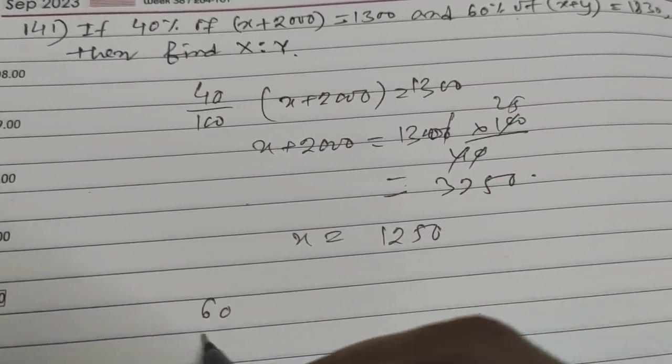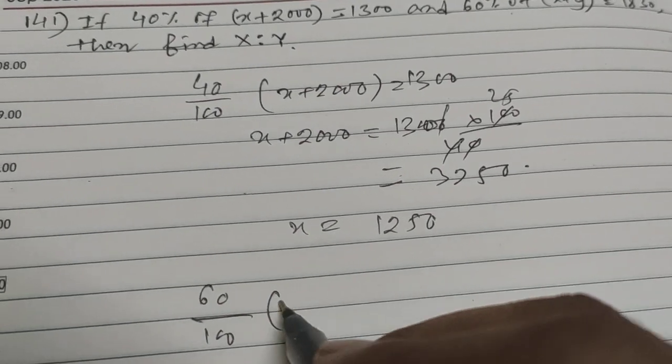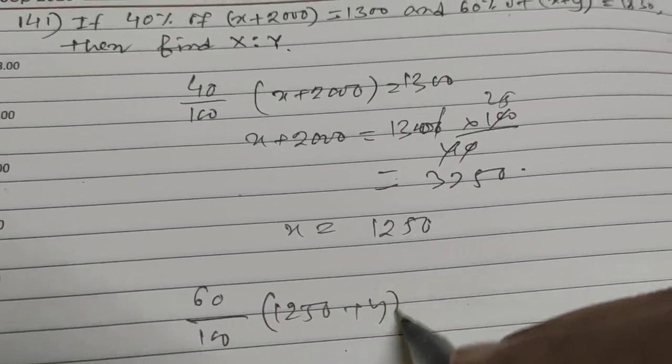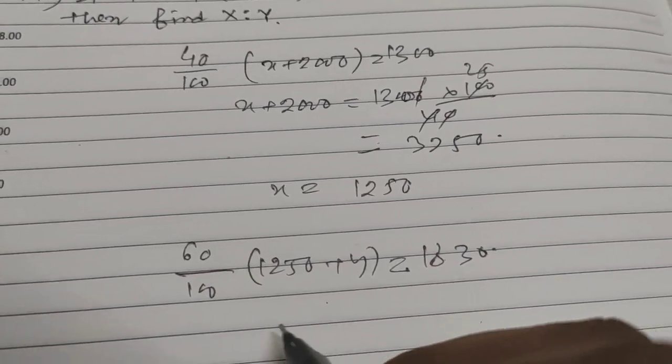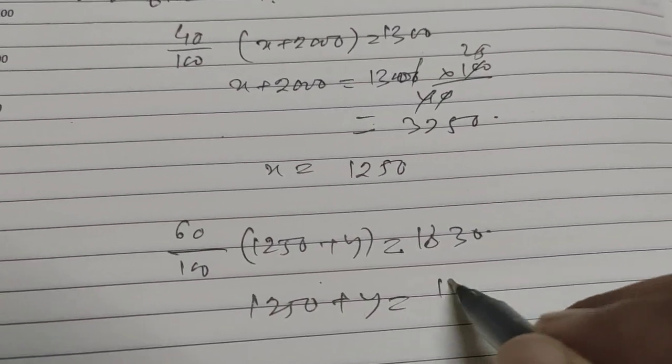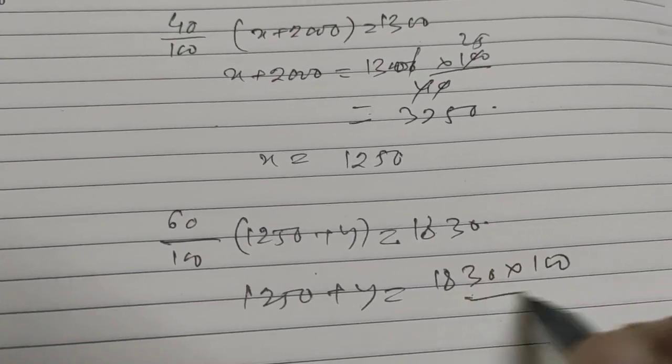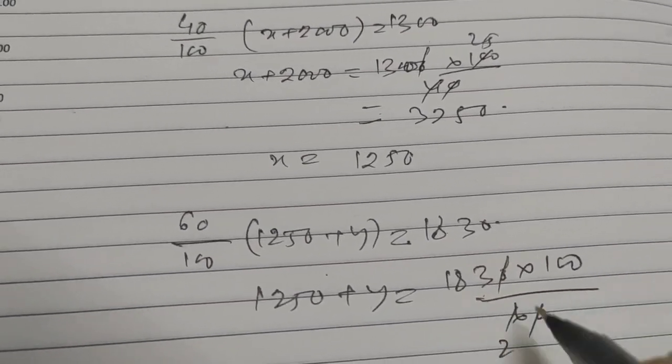And 60 percent of x plus y. So 60 by 100 into x plus y, where x is 1250 plus y, equals 1830. So 1250 plus y equals 1830 into 100 by 60, which is 3050.